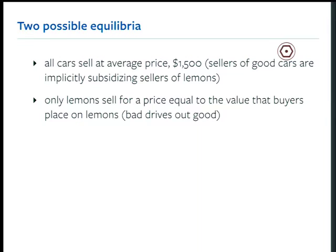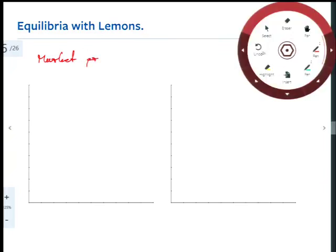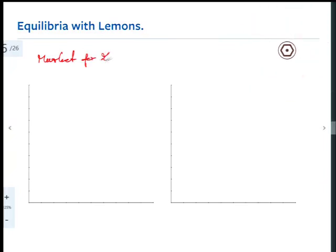Let's draw the picture. On the left, the market for lemons; on the right, the market for good cars. On the y-axis we have price, on the x-axis we have quantity. What's the willingness to accept of sellers in the market for lemons? Sellers of lemons are willing to accept $750.